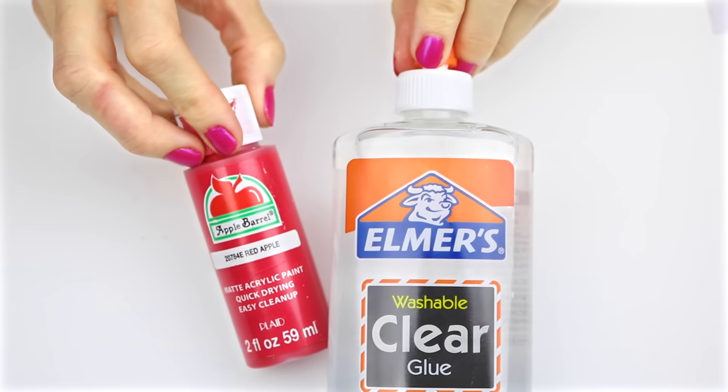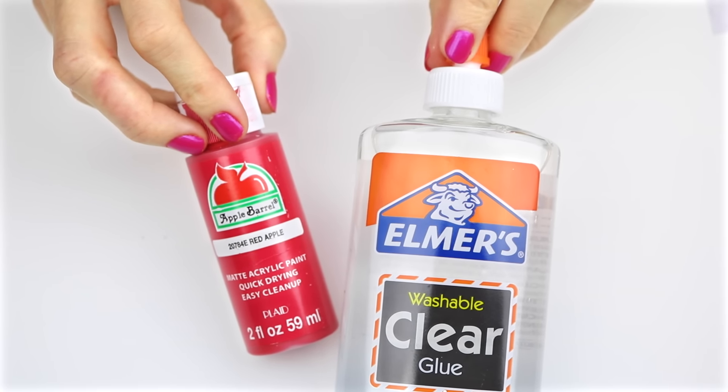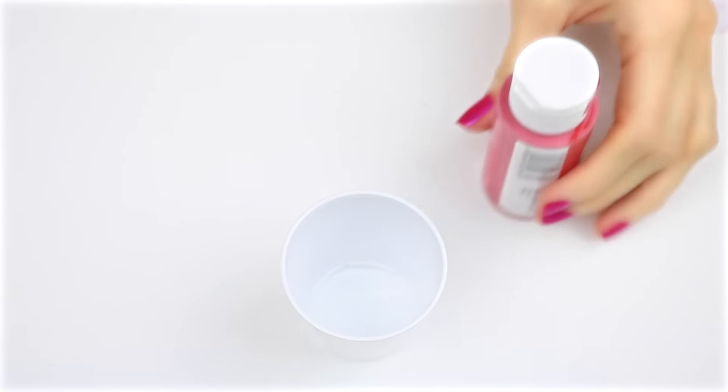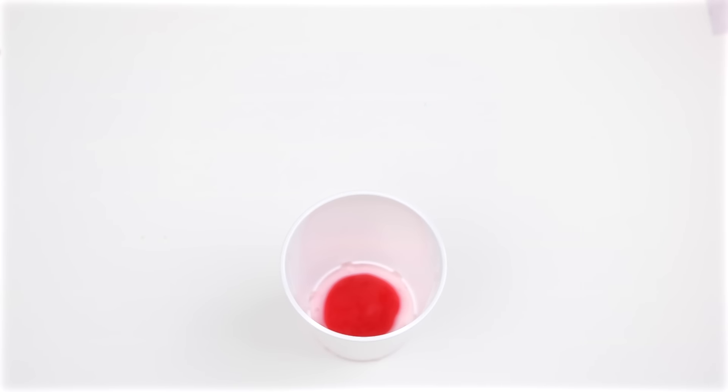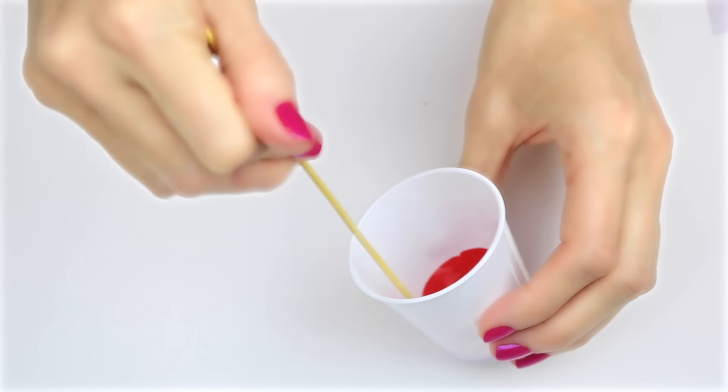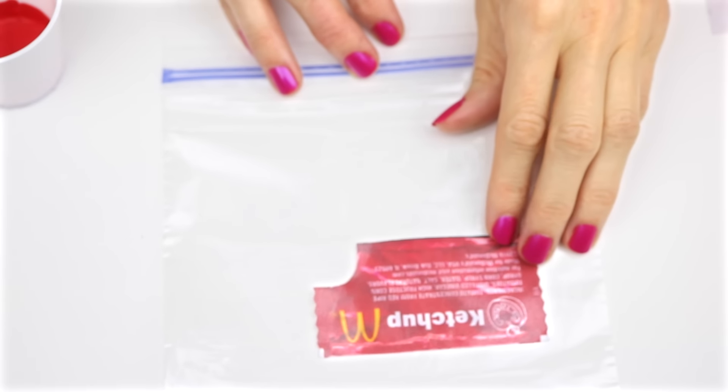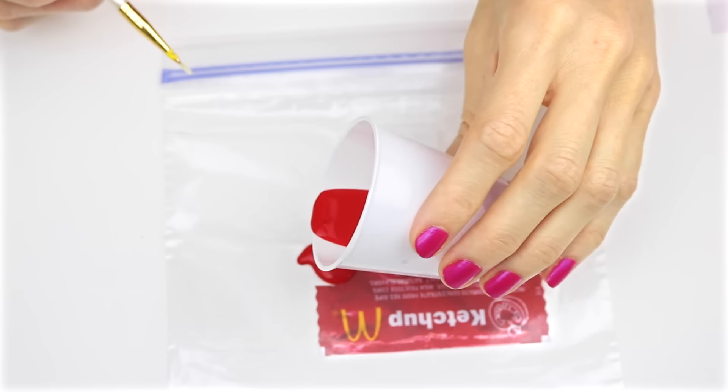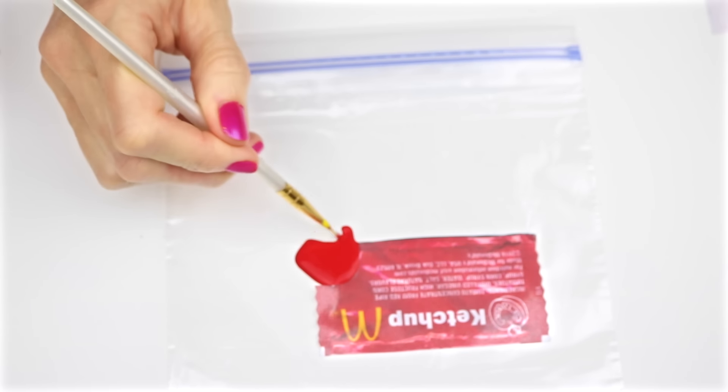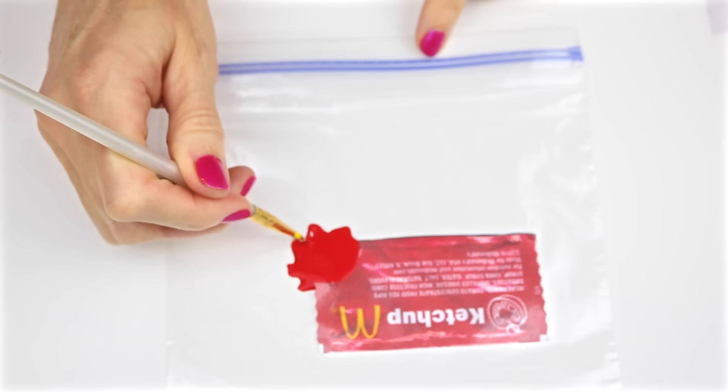For the fake ketchup spill, I'm going to use some red acrylic paint and some clear Elmer's glue. Mix equal amounts of glue and paint together. Lay the ketchup image on a plastic bag, pour out a little bit of the paint and glue mixture, and then using a paint brush, I formed it into a spill shape. Set that aside and let it dry for about 24 hours.